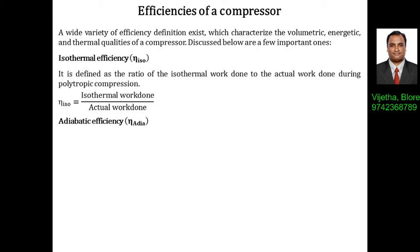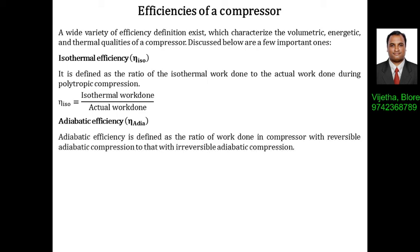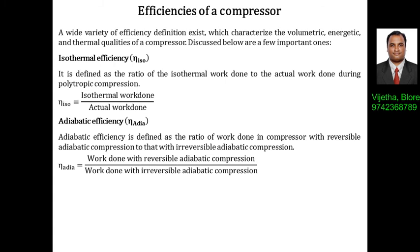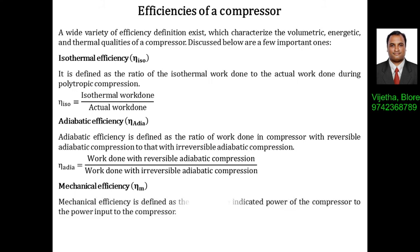One more type of efficiency is called adiabatic efficiency. It is defined as the ratio of work done in the compressor with reversible adiabatic compression to that with irreversible adiabatic compression. Mathematically, it is work done with reversible adiabatic compression divided by work done with irreversible adiabatic compression. This is called adiabatic efficiency.